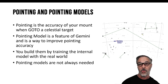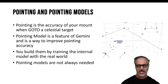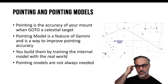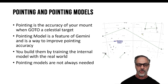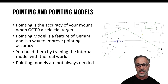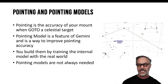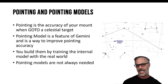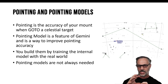The second thing is pointing and pointing models. There's sometimes been confusion about what exactly a pointing model is. When I think about pointing, I think of it as the accuracy of your mount when you're doing a GoTo — you type in the name of your target like M33 or NGC 6060, press GoTo, and the Gemini computer looks up that object in its database and slews to where it thinks it is in the sky. In many cases, the internal model in your Gemini computer and the external world aren't quite aligned just yet.